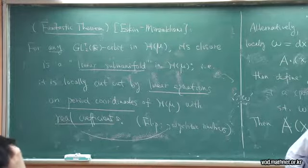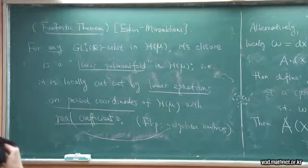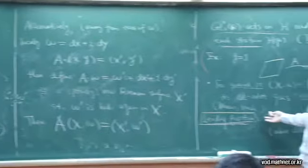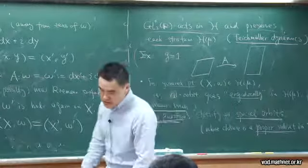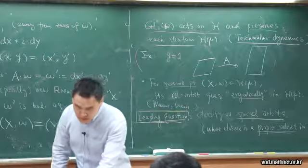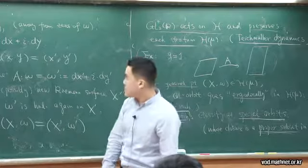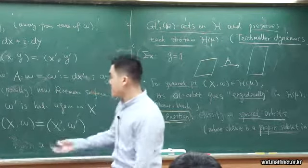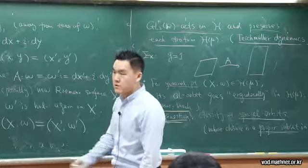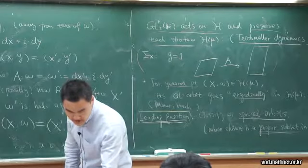So the plan is that next time I'm going to tell you, in this sense, the most special orbit closure — something like the minimum-dimensional orbit closure — which is called a Teichmüller curve. Then we are going to define some invariants associated to this Teichmüller curve, and try to use ideas from intersection theory on the moduli space to compute these values for these dynamical invariants.